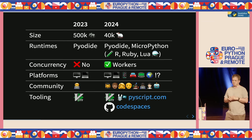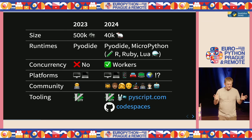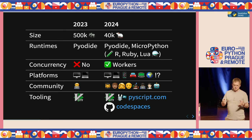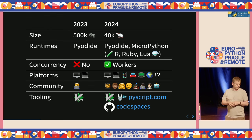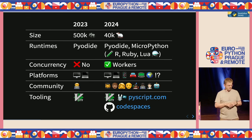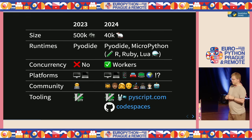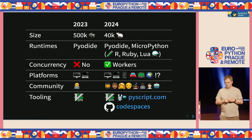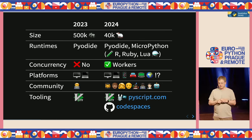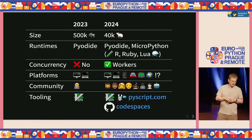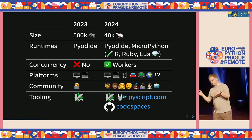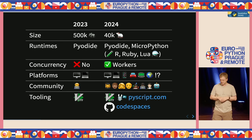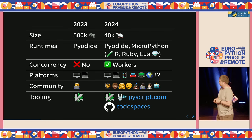We also have experimental support for R, Ruby, and Lua as supported WASM runtimes. And if you saw this morning, my colleague Antonio gave a talk about SPy, and when that matures we hope to include it as part of the PyScript family as well.